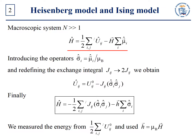The sum over both i and j runs from 1 to N. The prime implies that i is not equal to j, and we took into account that Uij is equal to Uji. For the sake of convenience, let us first introduce the operator sigma, and second redefine the exchange integral Jij as 2Jij, so that we have the following expression for the Uij operator.